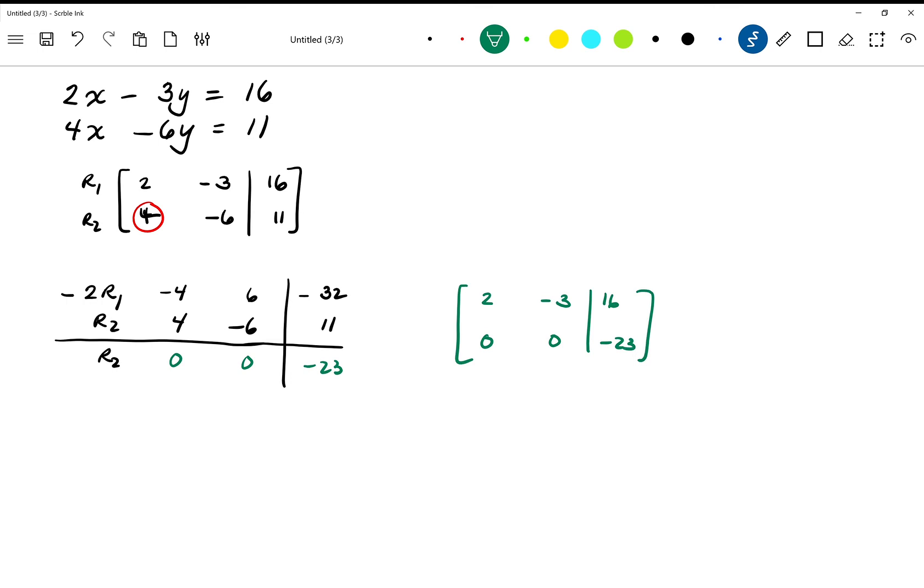Now at that point, we can stop because now we look at this and we say it's impossible to get what I need here. Remember, the second row needs to be a 0 followed by a 1 followed by a number, and there's no way to make a number out of a 0.